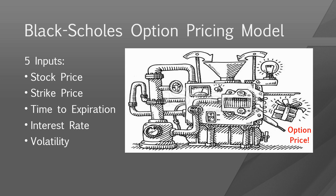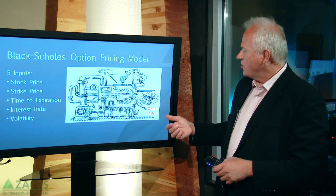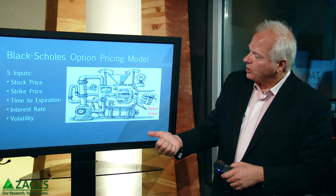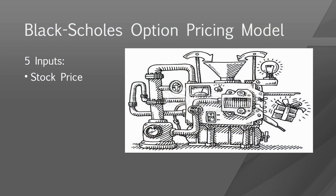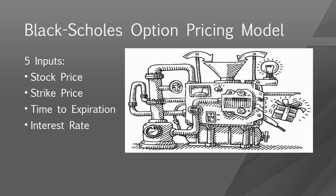So now, how do we get implied volatility? We simply re-engineer the model. Instead of solving for the option price, we put the option price into the model and solve for volatility. We put in the stock price, the strike price, the time to expiration, interest rates as a small factor, and then the actual option price where the option is trading. We run the calculation and it spits out implied volatility.